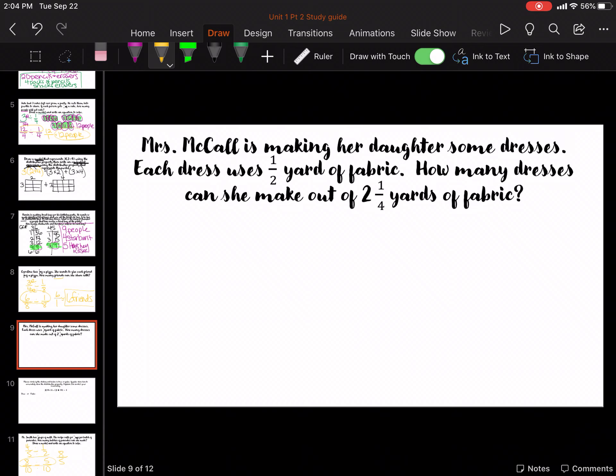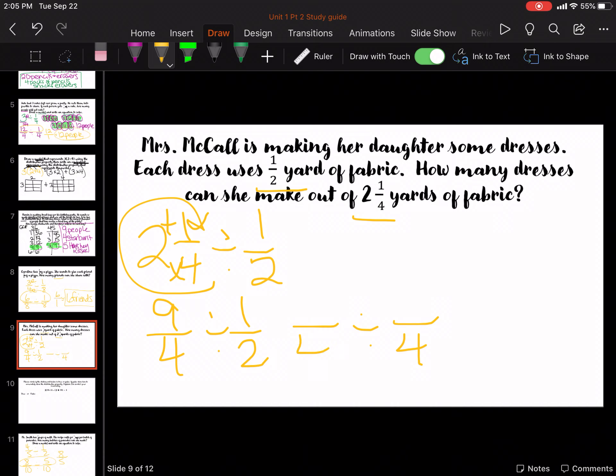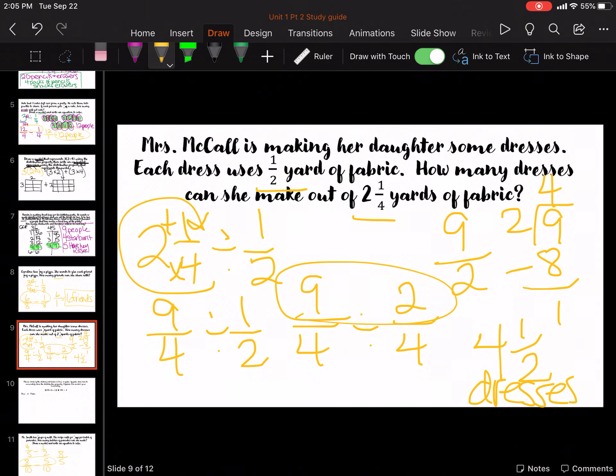Okay. Miss McCall is making her daughter some dresses. Each dress uses 1 half of a yard. She has 2 and 1 fourth yard. 2 and 1 fourth divided by 1 and 1 half. Remember, you've got to cartwheel around on these. So, 4 times 2 is 8, plus 1 is 9 fourths, divided by 1 half. Common denominator of 4. So, times 2 and times 2. 9 over 2 goes in 4 times. 1 left over. So, it's 4 and 1 half dresses.